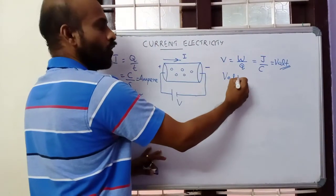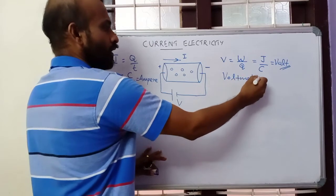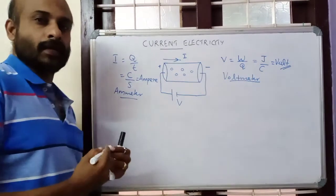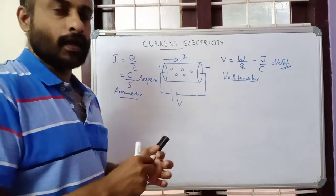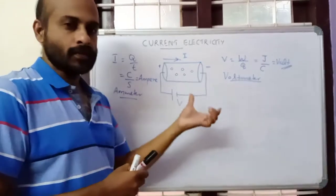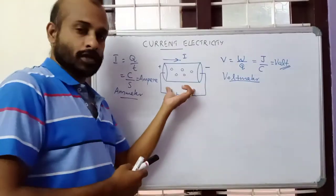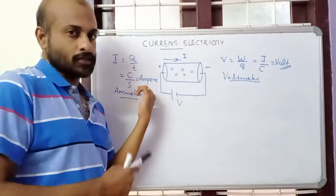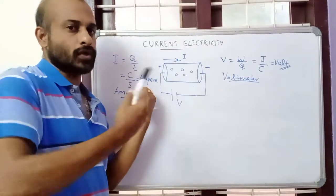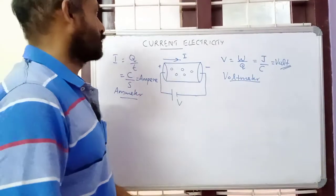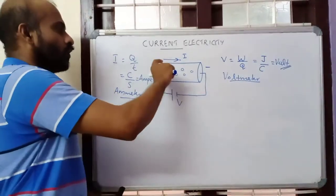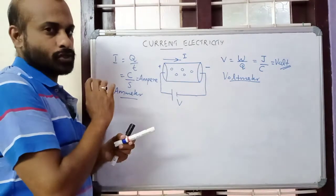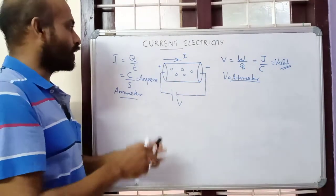To measure the potential difference, the device we use is called the voltmeter. The voltmeter is always connected in parallel across the points where we need to measure the potential difference, and the ammeter is always connected in series in the circuit. So electrons flow or current flows through a conductor normal to the cross section.